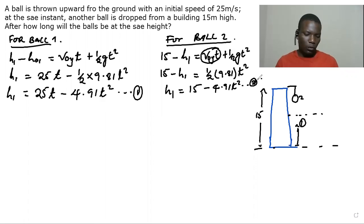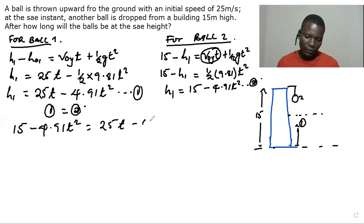So now we can say these equations are equal. So we can equate equation one and equation two. So we have 15 minus 4.91 t squared equal to 25t minus 4.91 t squared.